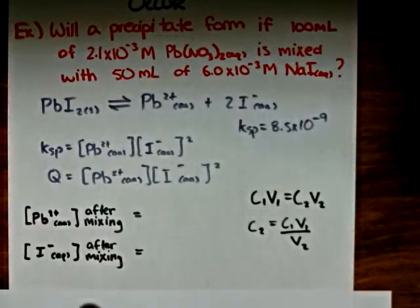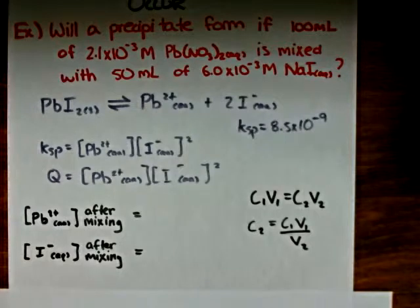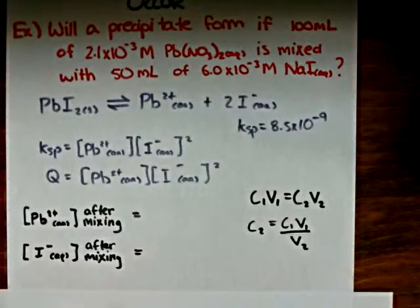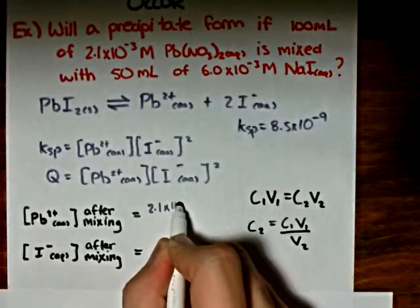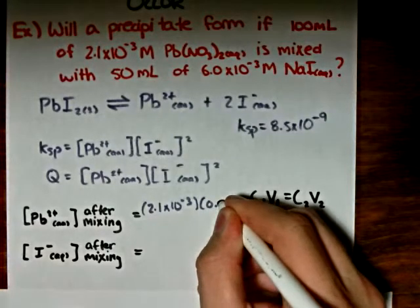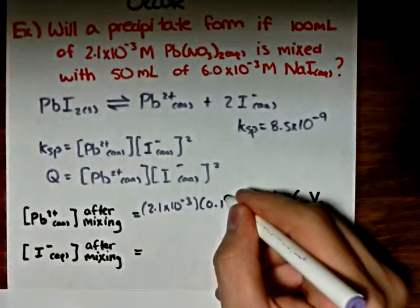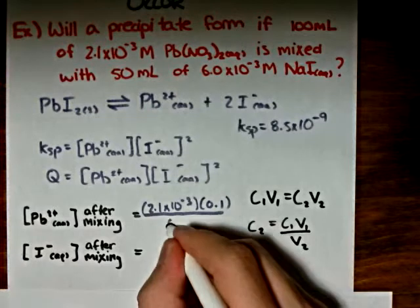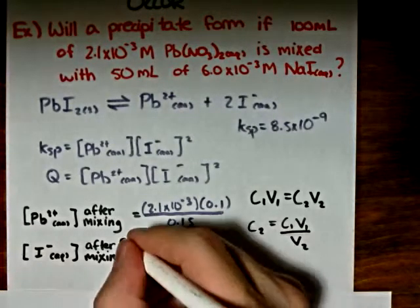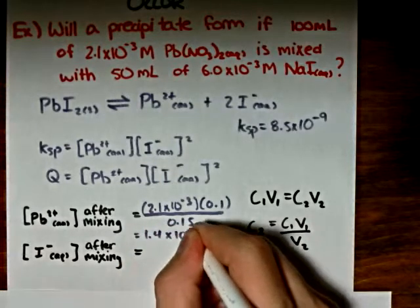If we calculate the final concentration of the lead(II) ions, we see that the initial concentration C1 is equal to 2.1 times 10 to the negative 3, multiplied by the initial volume of 0.1 liters, all divided by 0.15 liters. That gives us a final concentration of the lead(II) ions equal to 1.4 times 10 to the negative 3 moles per liter.